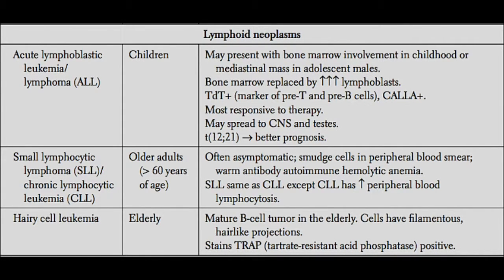The first of these is ALL, or acute lymphoblastic leukemia. As the name implies, this is a malignancy that involves a very large number of lymphoblasts. Lymphoblasts take over the bone marrow, so you have a population of immature lymphocytes overpopulating the bone marrow and replacing other crucial components. You might see platelets getting quite low in these patients — thrombocytopenia.